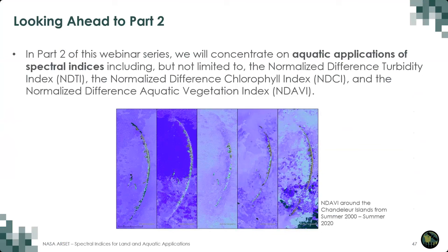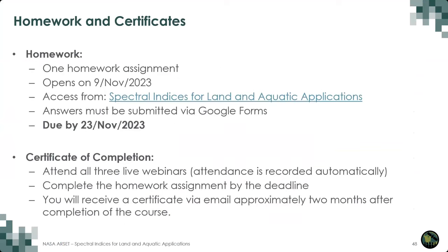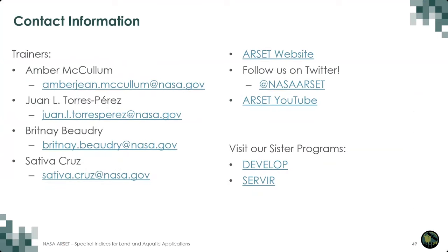Looking ahead to next week, we will discuss the Normalized Difference Turbidity Index, the Normalized Difference Chlorophyll Index, and the Normalized Difference Aquatic Vegetation Index. As a reminder, the homework assignment will be available on the website on November 9th — a Google Form due November 23rd. To receive a certificate of completion, you must attend all three webinars and complete the homework by the due date. Certificates will be sent out about two months after the end of the course. Please reach out with any additional questions, and follow us on Twitter, check the RSET website, or visit our sister programs DEVELOP and SERVIR.